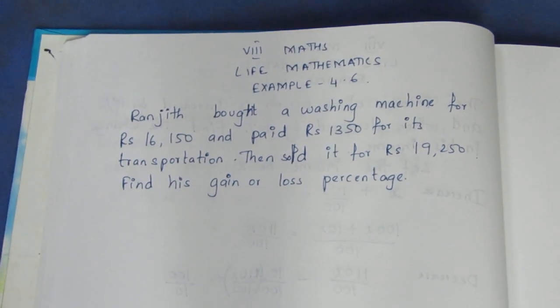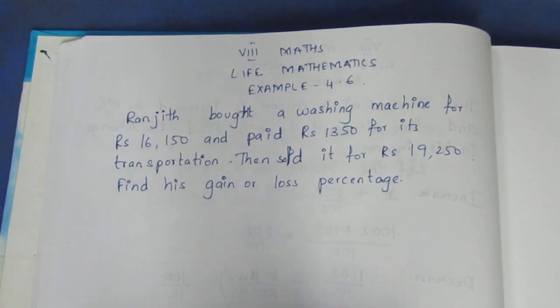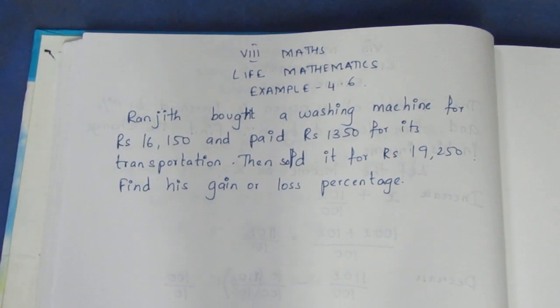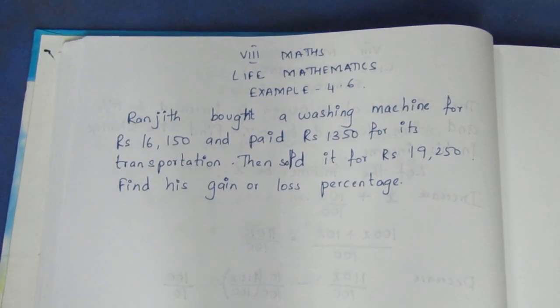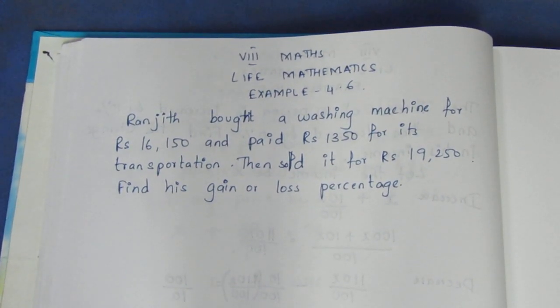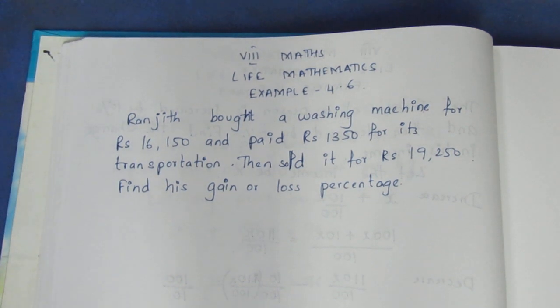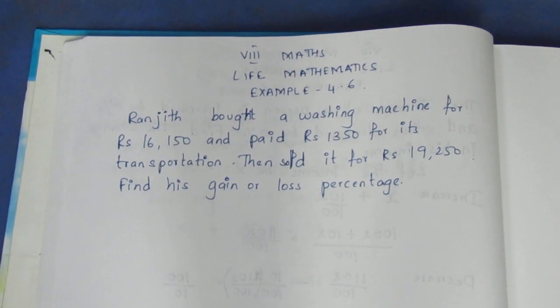Hello viewers, I am Aitli. In this video, let's look at example 4.6. The question is: Ranjith bought a washing machine for Rs. 16,150 and paid Rs. 1,350 for its transportation.